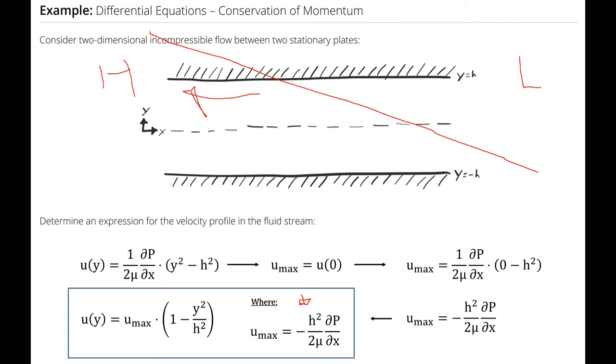Therefore, the velocity is in the opposite direction as a positive pressure gradient. So u_max will be positive for a pressure gradient that is negative. That's why there's a negative in this equation.